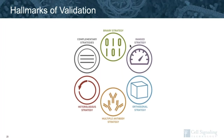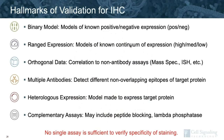How does one perform careful and complete antibody validation? At CST, we focus on the hallmarks of antibody validation — six complementary strategies that can be used to determine the functionality, specificity, and sensitivity of an antibody in a given assay. Binary models are models of known positive or negative protein expression, which may include cells or tissues, including wild type versus genetic knockouts. For ranged expression, models of a known continuum of expression — high, medium, low expressors — cells or tissues, as well as assays such as siRNA. Orthogonal data is when we correlate results to non-antibody-based assays, such as mass spectrometry or ISH.